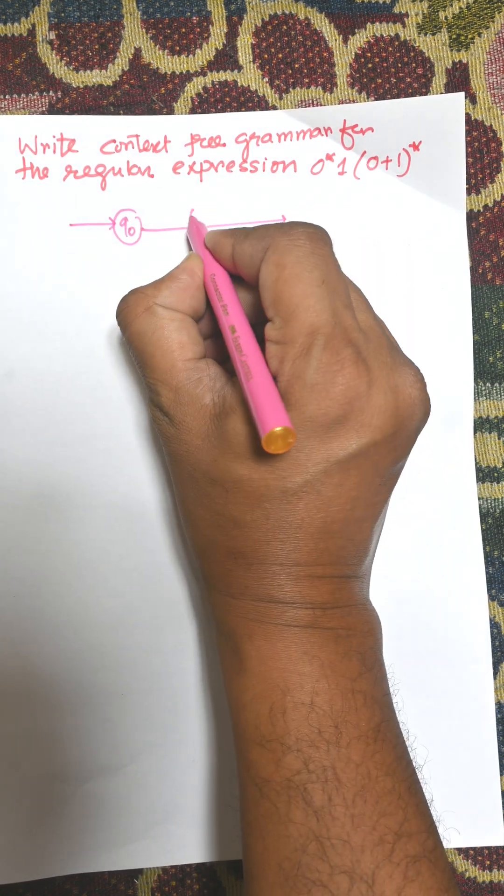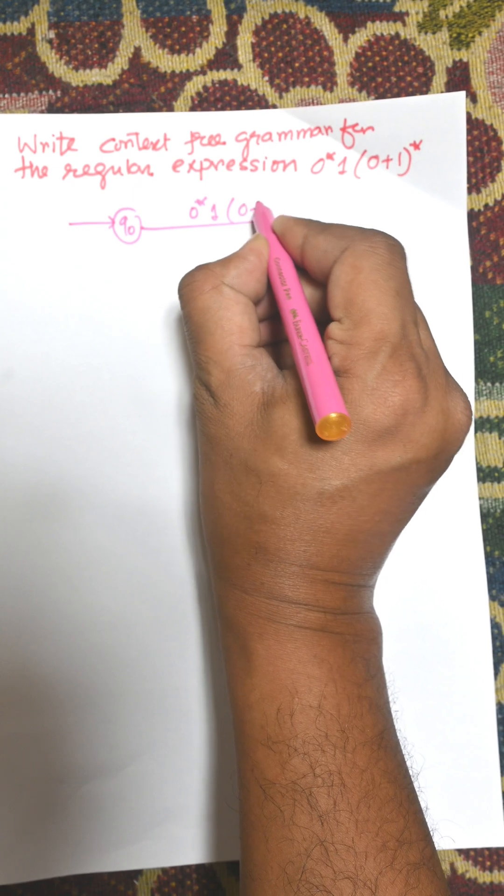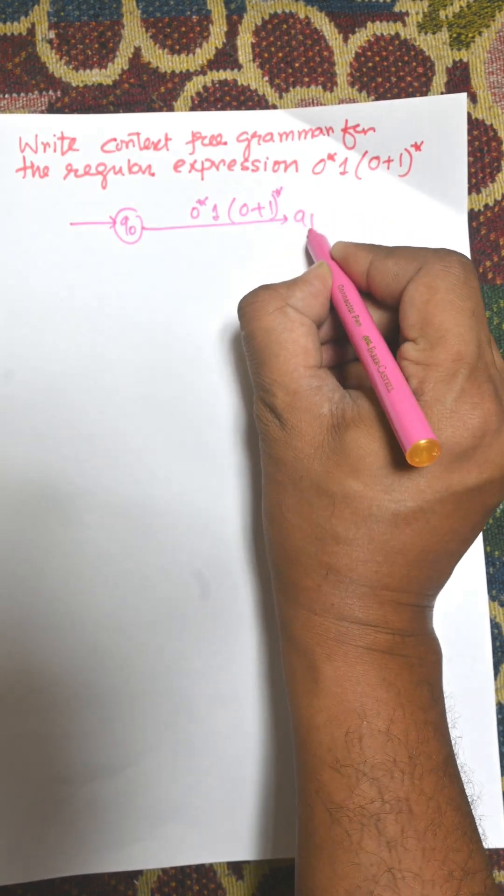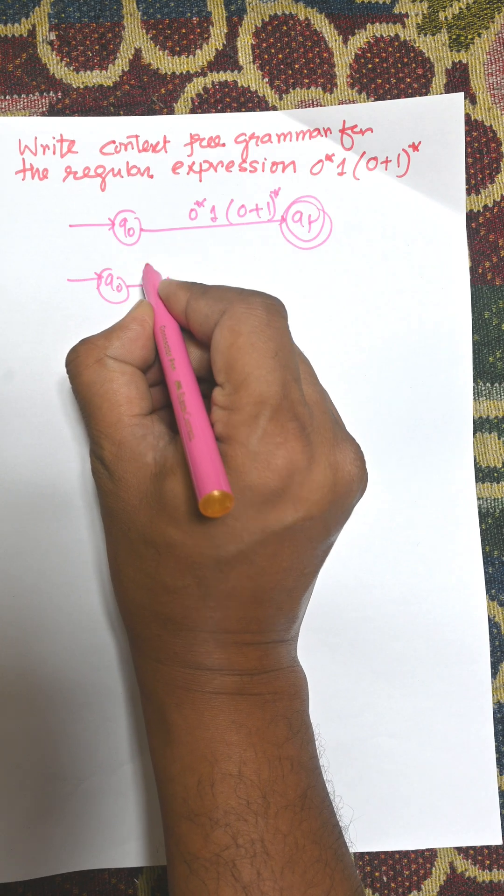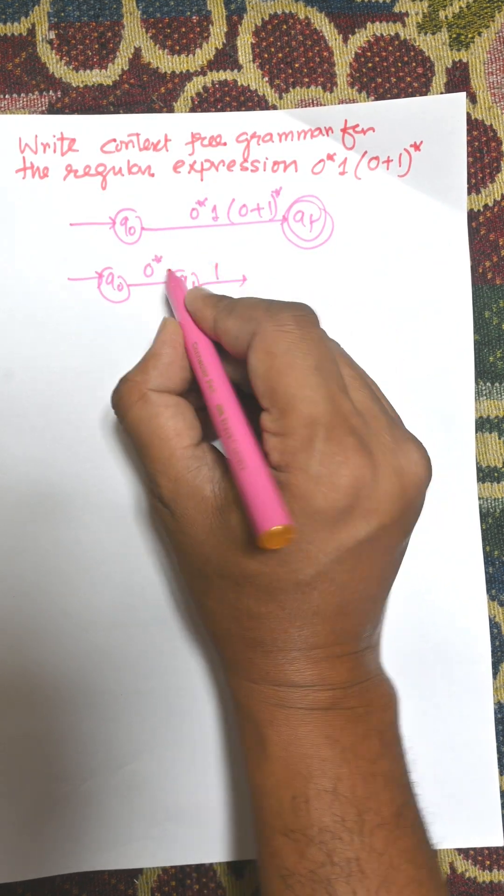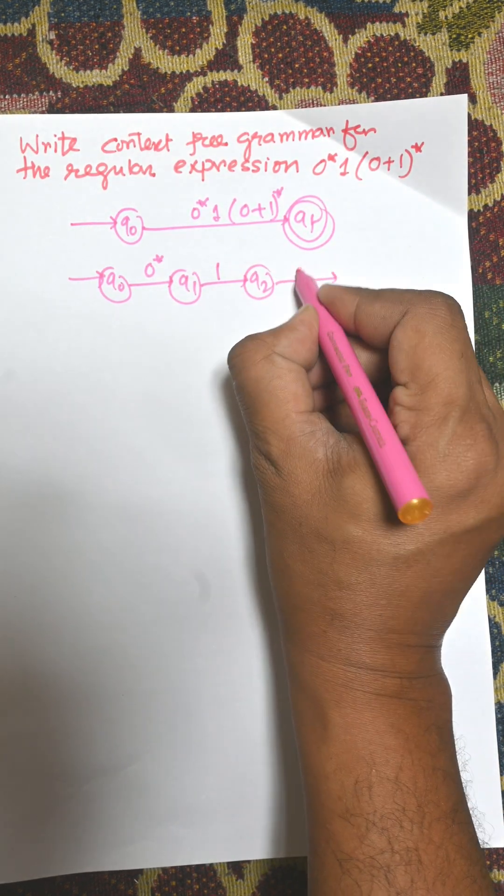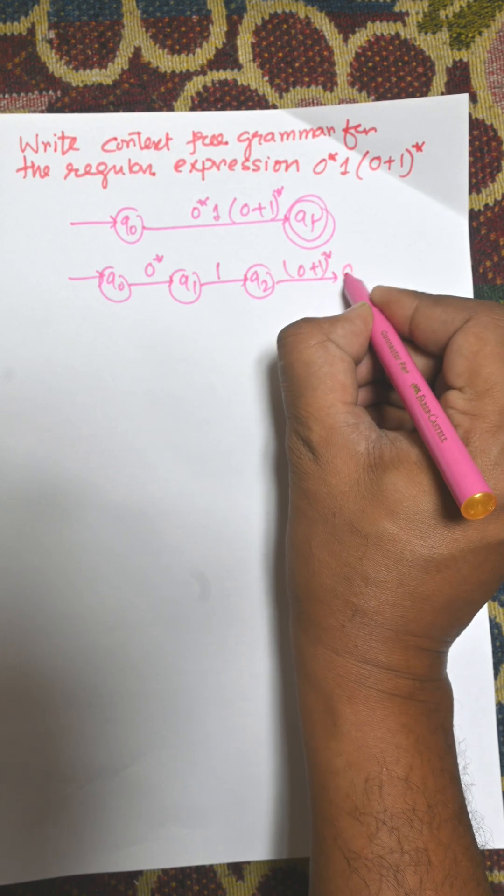Q0 is the initial state and consider this as a single input Q0 to Qf. Then Q0 to 0 star Q1, and then 1 to Q2, then 0 plus 1 over star to Qf.